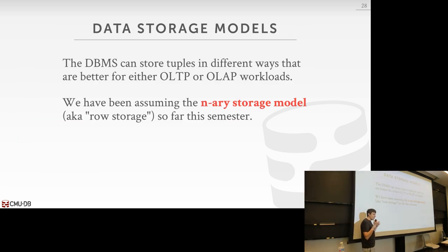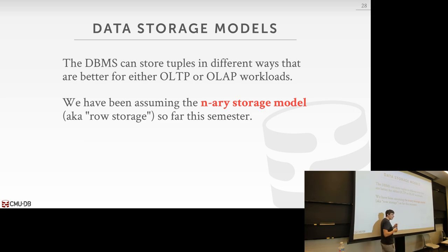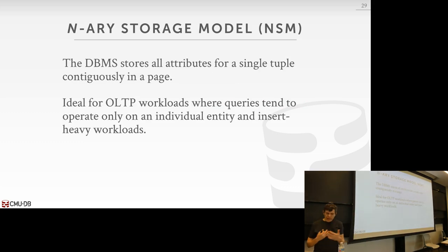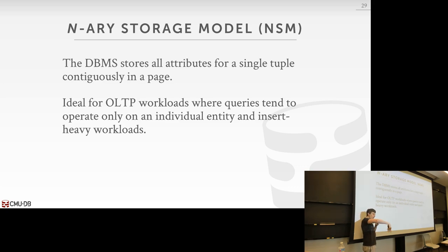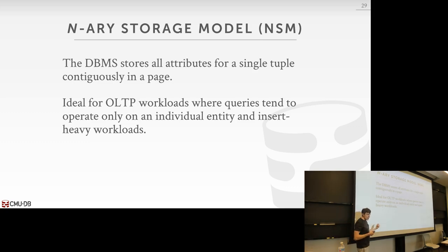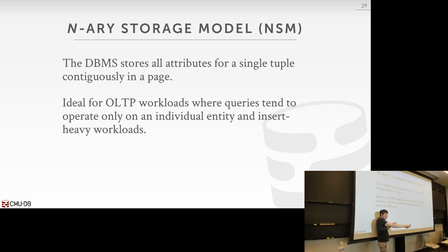Everything we've talked about so far uses the N-ary storage model. The idea is we take all the attributes for a single tuple and store them continuously in our pages — this is why I avoid the term 'row' since it won't make sense when we talk about column stores. This model is ideal for OLTP because the amount of data accessed in those queries is small and it's accessing single entities: get my account information, get my orders. I want all the data for my account, not all the millions of customers.